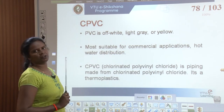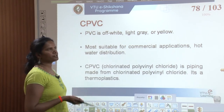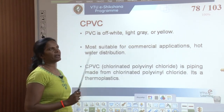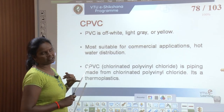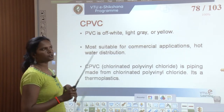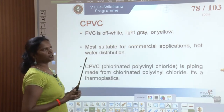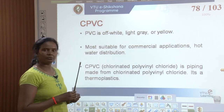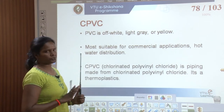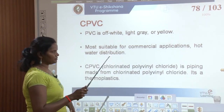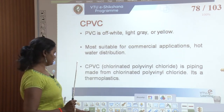CPVC is most suitable for commercial applications and is very suitable for hot water distribution systems. It is important for us to remember what type of pipes to use for different water supplies — for cold water and for hot water. For hot water from geysers or centralized hot water systems, CPVC pipes can be used. Chlorinated polyvinyl chloride is a thermoplastic.